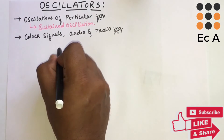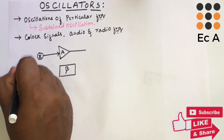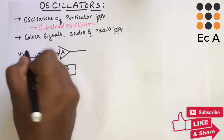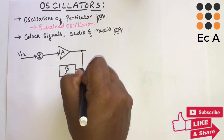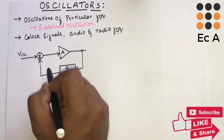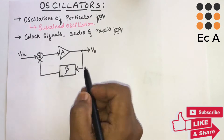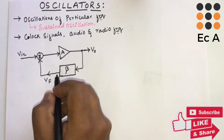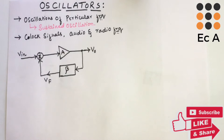Before understanding the oscillator, let us consider an amplifier circuit with feedback. The input to the amplifier is Vin. Some portion of the output signal is fed back to the feedback circuit, and the output of the feedback circuit is given as the input to the amplifier. V0 is the output of the amplifier and Vf is the feedback voltage, which is the output of the feedback circuit.